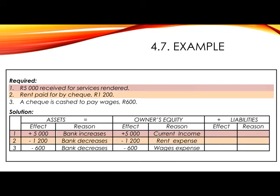Number 2. Rent paid for by check, 1,200 Rand. The two accounts involved are Bank and rent expense. Assets will be minus 1,200 as bank decreases, and rent expense being an expense will decrease owner's equity. So in equity, you will show minus 1,200 for rent expense.